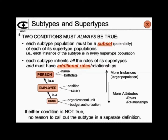As we move up the hierarchy we have to be able to have more instances, and as we move down we have to be able to have more roles and/or relationships. If either condition is not true, there is no reason to call it a subtype in a separate definition.